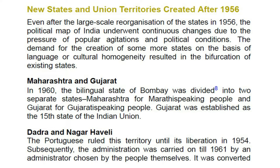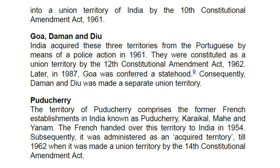Dadra and Nagar Haveli: The Portuguese ruled this territory until its liberation in 1954. Subsequently, the administration was carried on till 1961 by an administrator chosen by the people themselves. It was converted into a union territory of India by the 10th Constitutional Amendment Act, 1961. Goa, Daman and Diu: India acquired these three territories from the Portuguese by means of a police action in 1961. They were constituted as a union territory by the 12th Constitutional Amendment Act, 1962. Later, in 1987, Goa was conferred statehood, and consequently Daman and Diu was made a separate union territory.